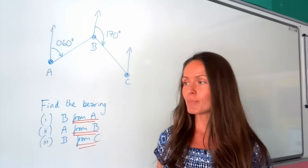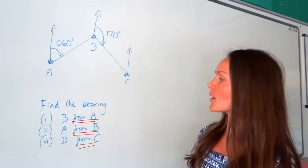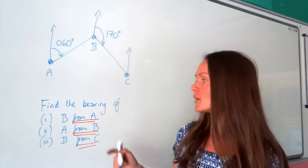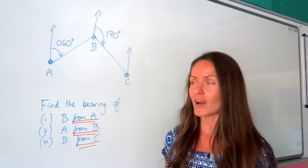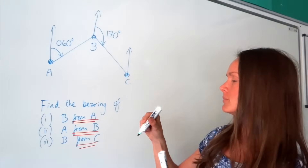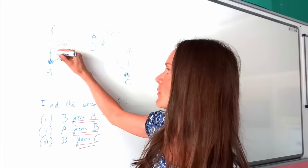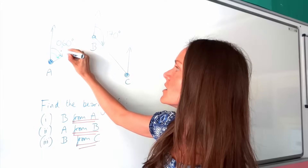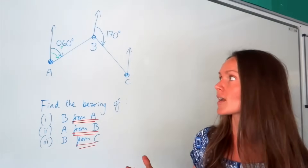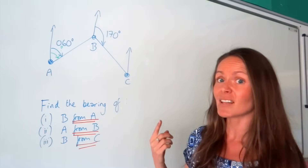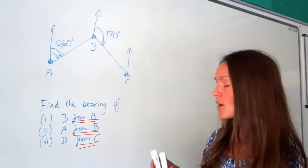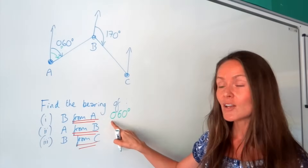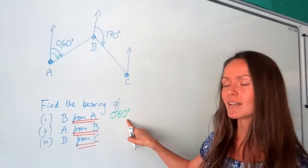In the last example there are three parts. Part one: find the bearing of B from A. That means we start on the north arrow of A, put the pen just above the point, and go clockwise until we hit the line travelling to B. This bearing has actually been given to us already — it's 60 degrees, written as 060 so that there are three figures.